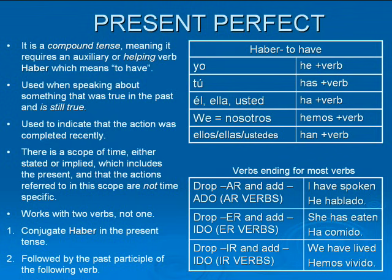The present perfect. It's used to indicate that the action was completed recently. Now this is a compound tense, meaning it requires a helping verb — haber, meaning 'to have.' So for yo, it's he; for tú, it's has; él, ella, and usted is ha; nosotros is hemos; and ellos, ellas, and ustedes is han. Then you add the verb: for AR, you remove that and you add -ado; for ER and IR, you remove those and you add -ido.